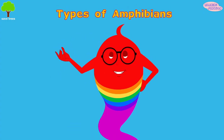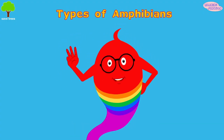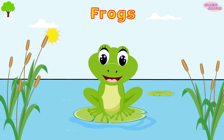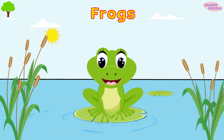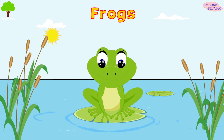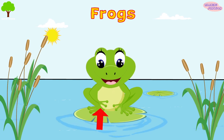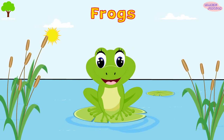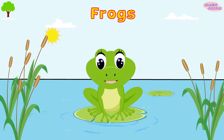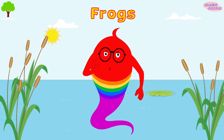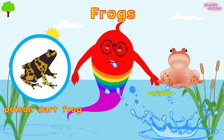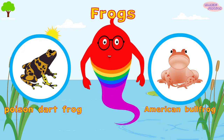We can divide the amphibians into three types. Frogs are amphibians of the order Anura. They have a small body, webbed fingers and toes, gibbous eyes, and no tail. Two species of frogs are the poison dart frog and the American bullfrog.